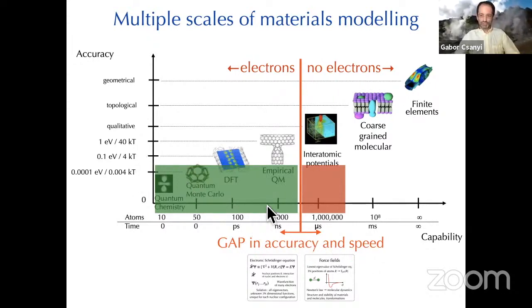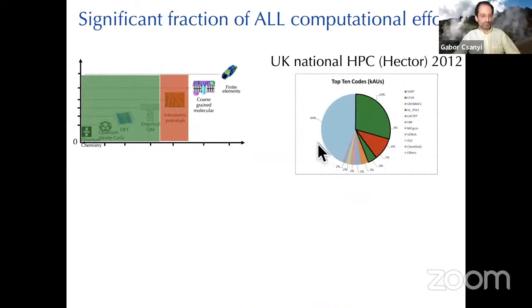And once you have a potential function like that, then you can apply Newton's law and do molecular dynamics. That opens up 99% of the world of chemistry and the entire world of material science. So that allows you to study the structure and stability of materials and molecules. There's this big gap in accuracy and speed.